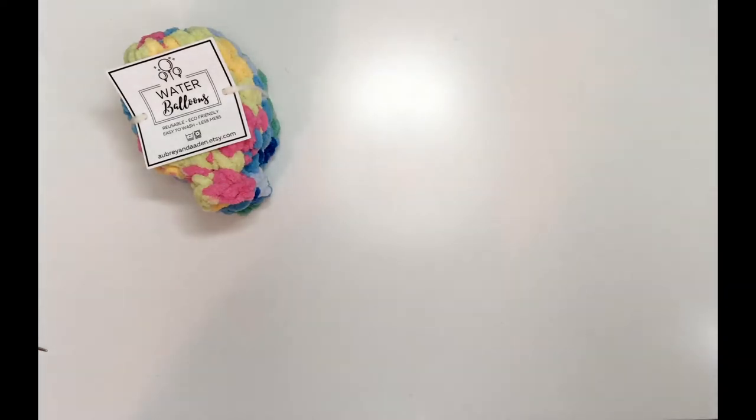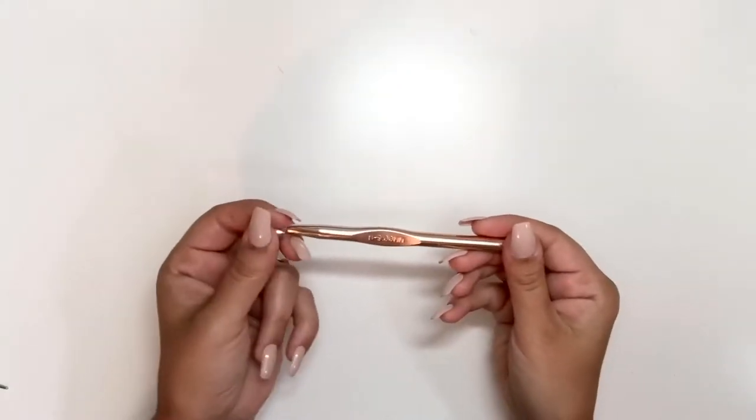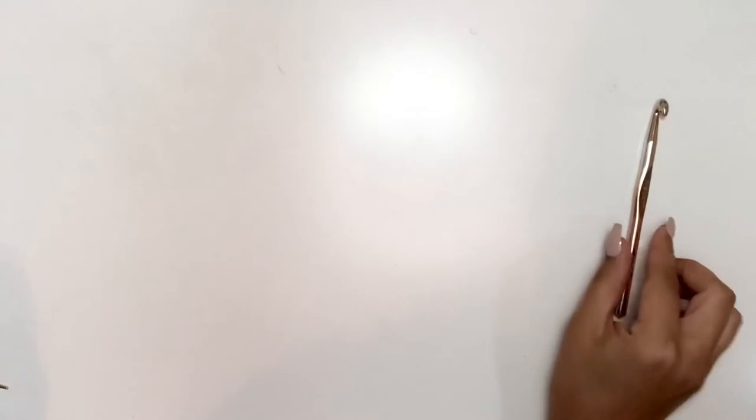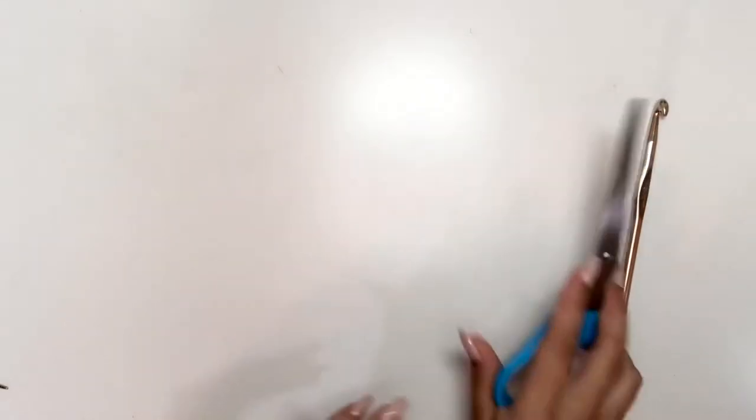For this tutorial I'm going to use a 9 millimeter crochet hook, a pair of scissors, a large needle, and some blanket yarn. This one is Bernat blanket brights.